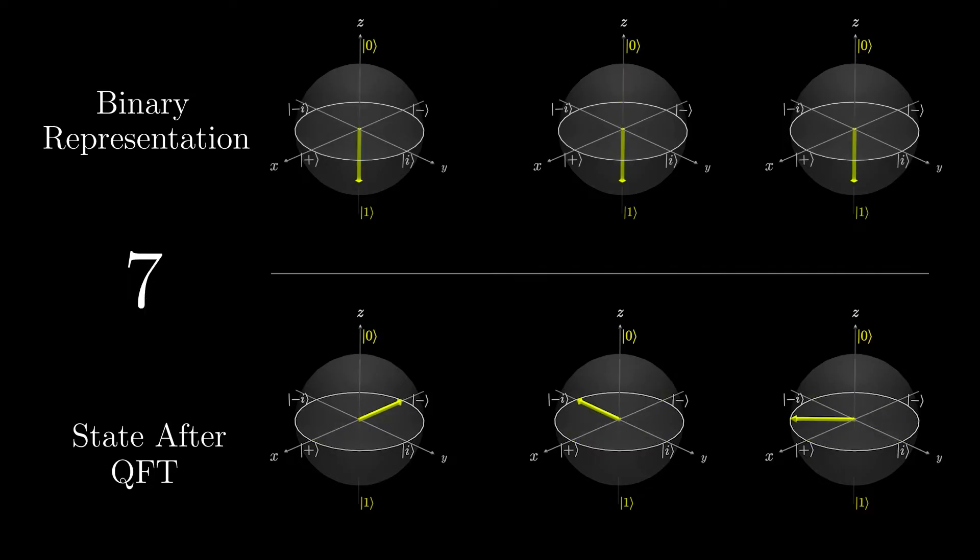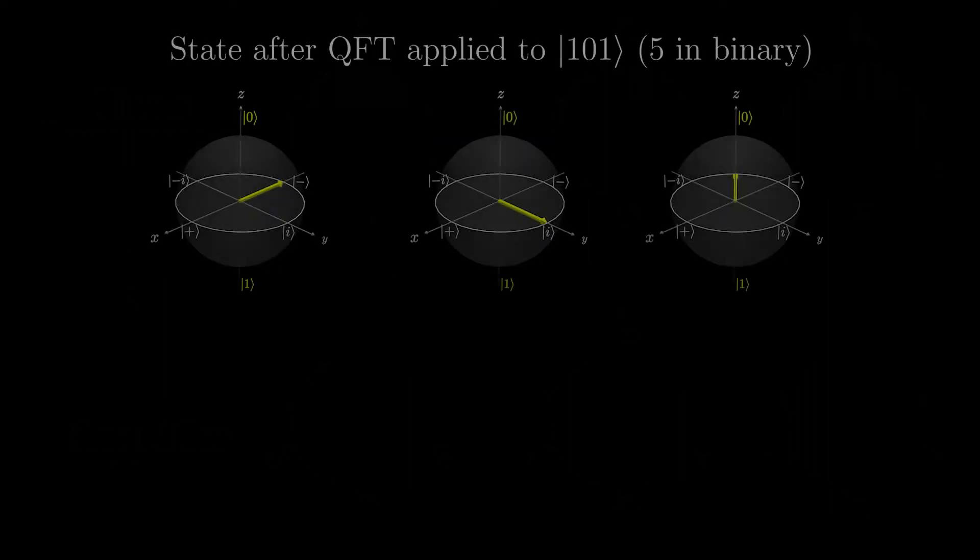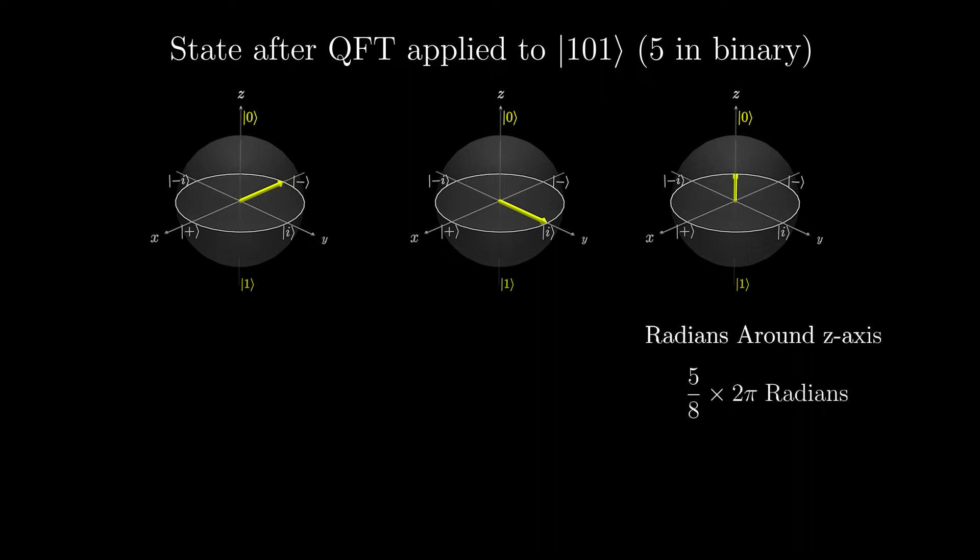Depending on the number, the phase of the qubits is different. Let's see how the number 5 is encoded once the quantum Fourier transform has been applied. As you can see, the right qubit has been rotated around the z-axis 5 over 8 times 2 pi radians, which is 5 pi over 4 radians.